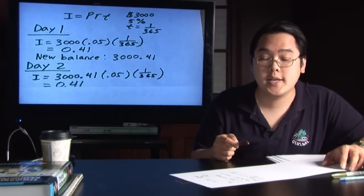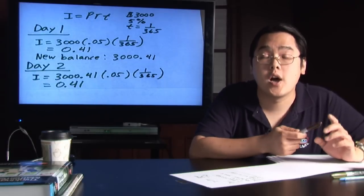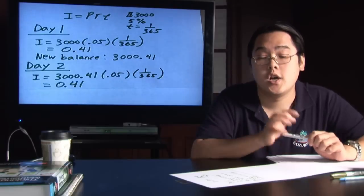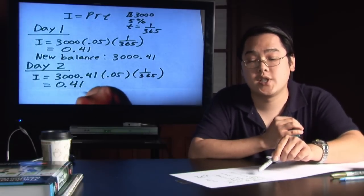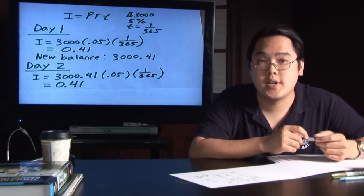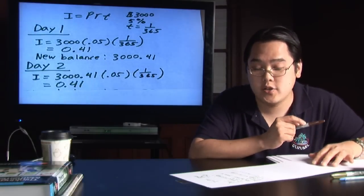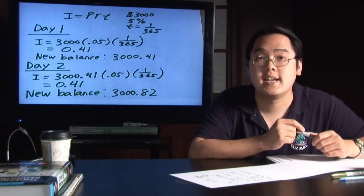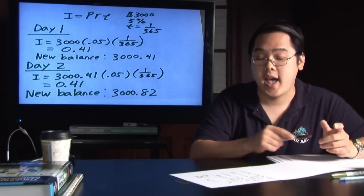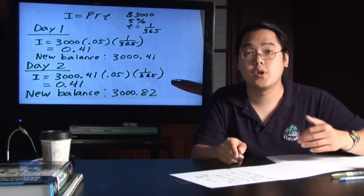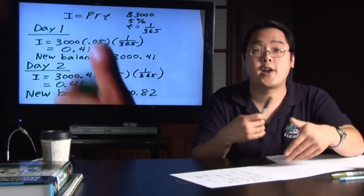and you will get, and this is strictly a coincidence, another 41 cents. You're going to take that 41 cents and add it to $3,000.41 for a grand total of $3,000.82, and that will be the principal you will use for day three, and the pattern repeats itself.